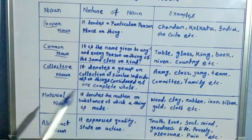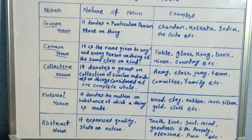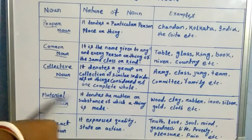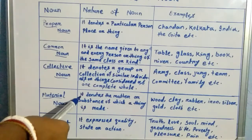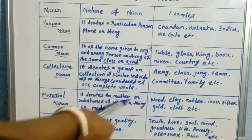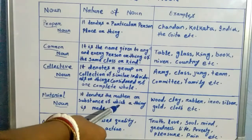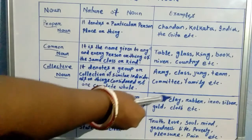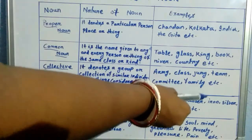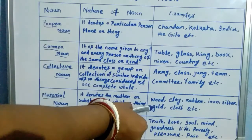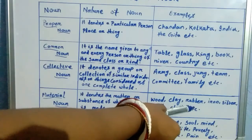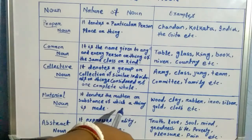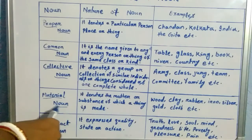Then come to the Material Noun. And what is Material Noun? It denotes the matter or substance of which a thing is made. And the examples are Wood, Clay, Rubber, Iron, Silver, Gold, Cloth, etc. from which the things are made are called Material Noun.